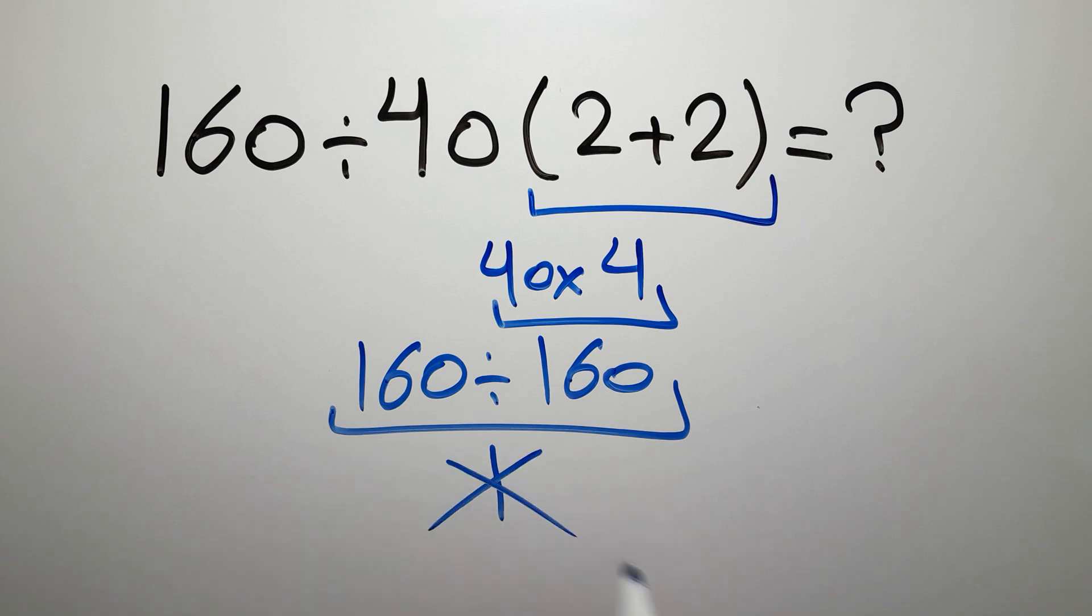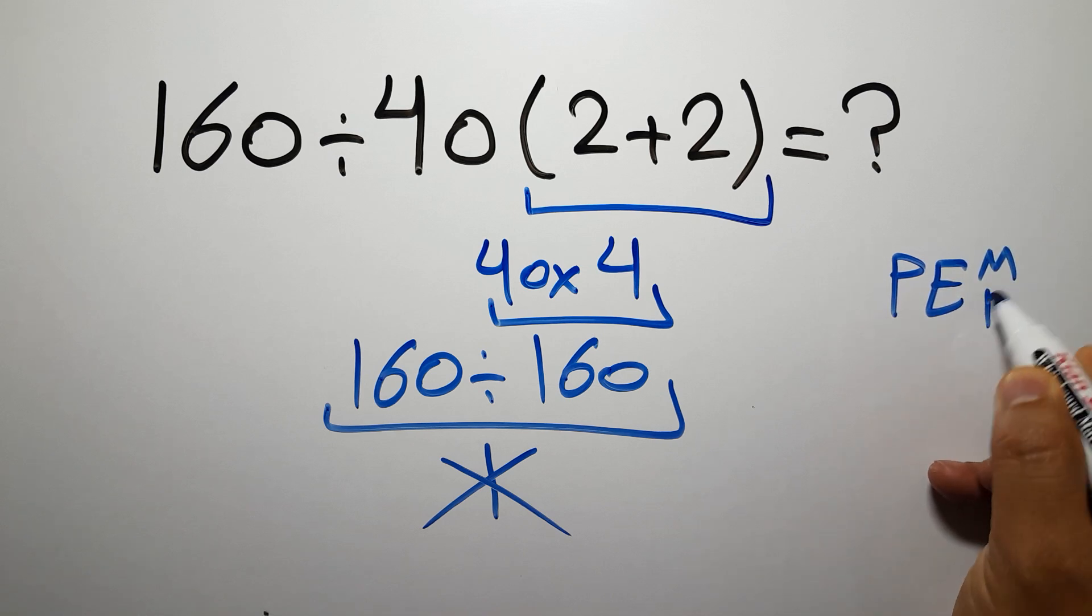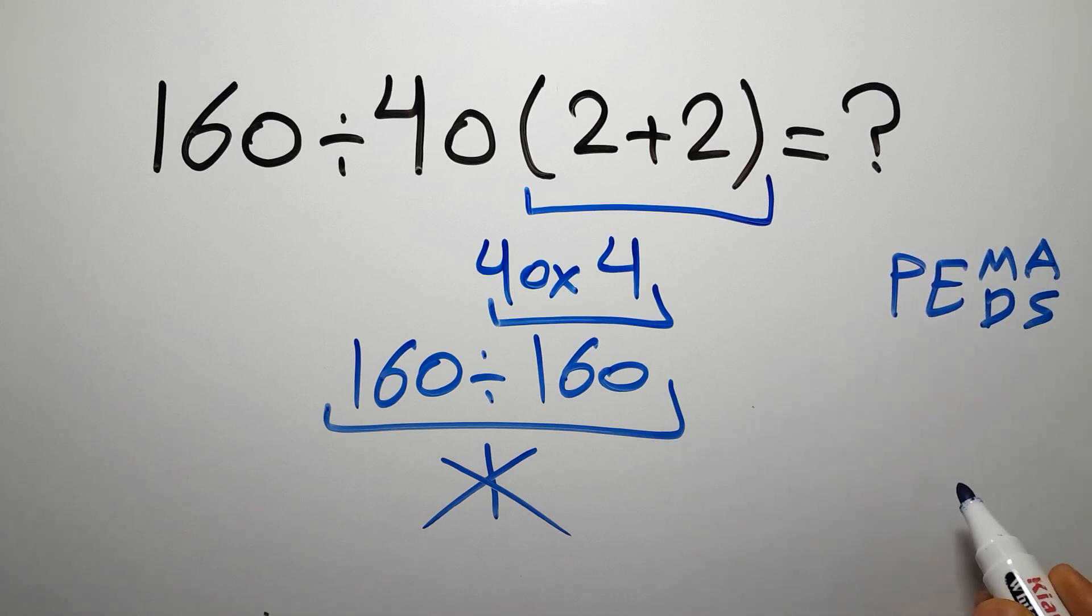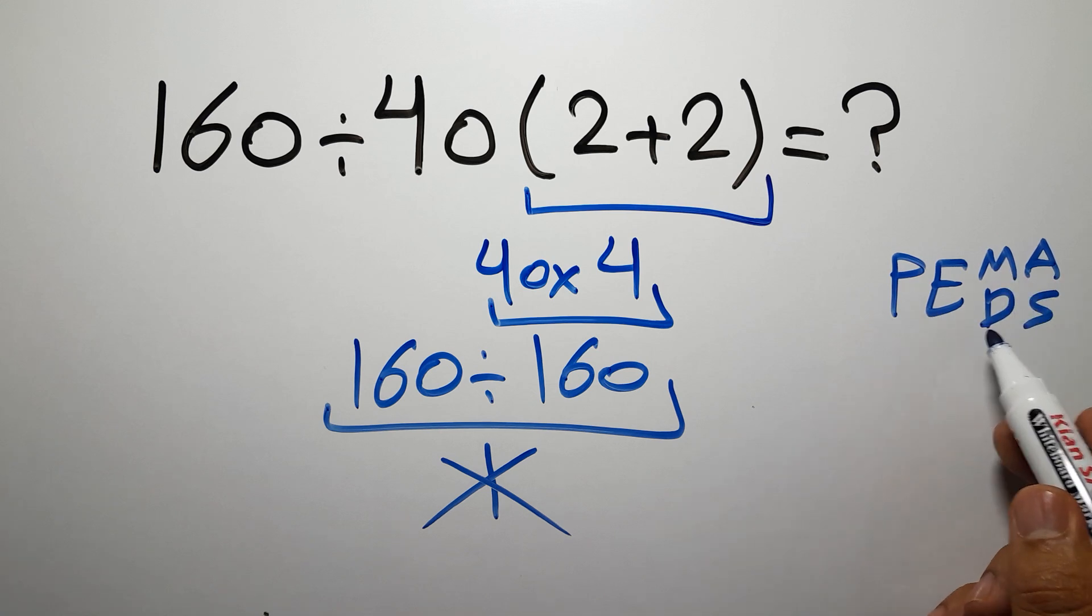But this answer is not correct. Because according to the order of operations, which is PEMDAS, first we have to do parentheses, then exponents, then multiplication or division, and finally addition or subtraction.